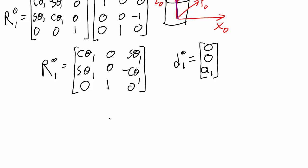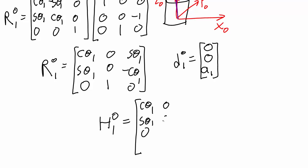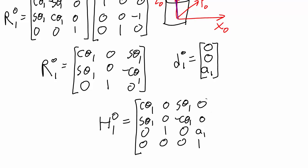Now that I have these two parts of the homogeneous transformation matrix, I can plug them in. I'll write the homogeneous transformation matrix from frame 0 to frame 1, with the rotation matrix in the upper left-hand corner, the displacement vector in the upper right, and then I fill in three zeros and a 1 at the bottom to make this matrix square. This is my complete homogeneous transformation matrix from frame 0 to frame 1.